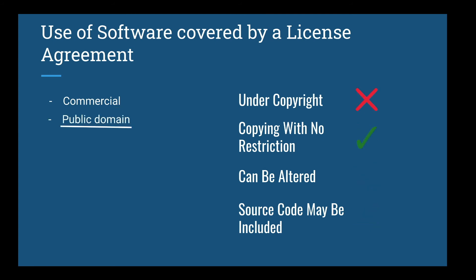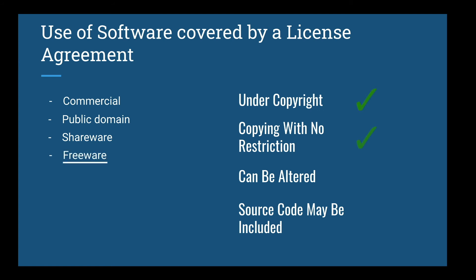Public domain is a product not under copyright, meaning it can be copied or altered with no restrictions. The source code may be included along with the executable files. Shareware is covered by copyright and cannot be copied unless for archival reasons; it also cannot be reverse engineered or altered. Source code is not normally included with shareware products. Freeware is covered by copyright but it can be copied and altered. Copies are allowed to be distributed and shareware may be included. Source code may or may not be included.